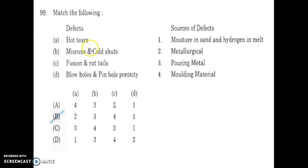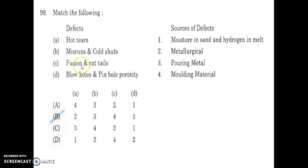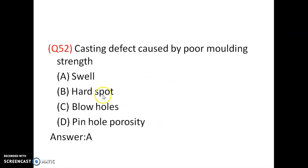Match the following: hot tears, misruns and cold shed, fusion and rat tails, blow holes and pinhole porosity. Blow holes occur due to moisture in sand and hydrogen content (D1). Fusion and rat tails occur due to molding material (C). Misruns and cold shed occur due to pouring conditions. Hot tears are metallurgical defects due to stresses and solidification temperature.